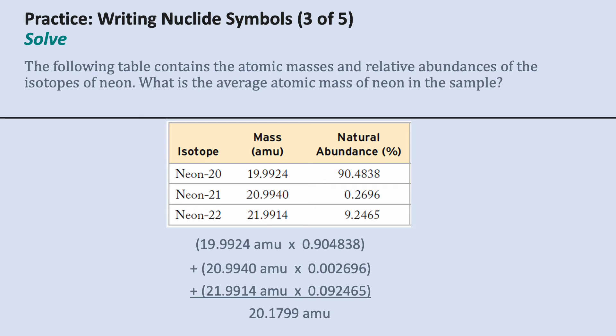If you multiply those and then add them all up, you get 20.1799 atomic mass units.